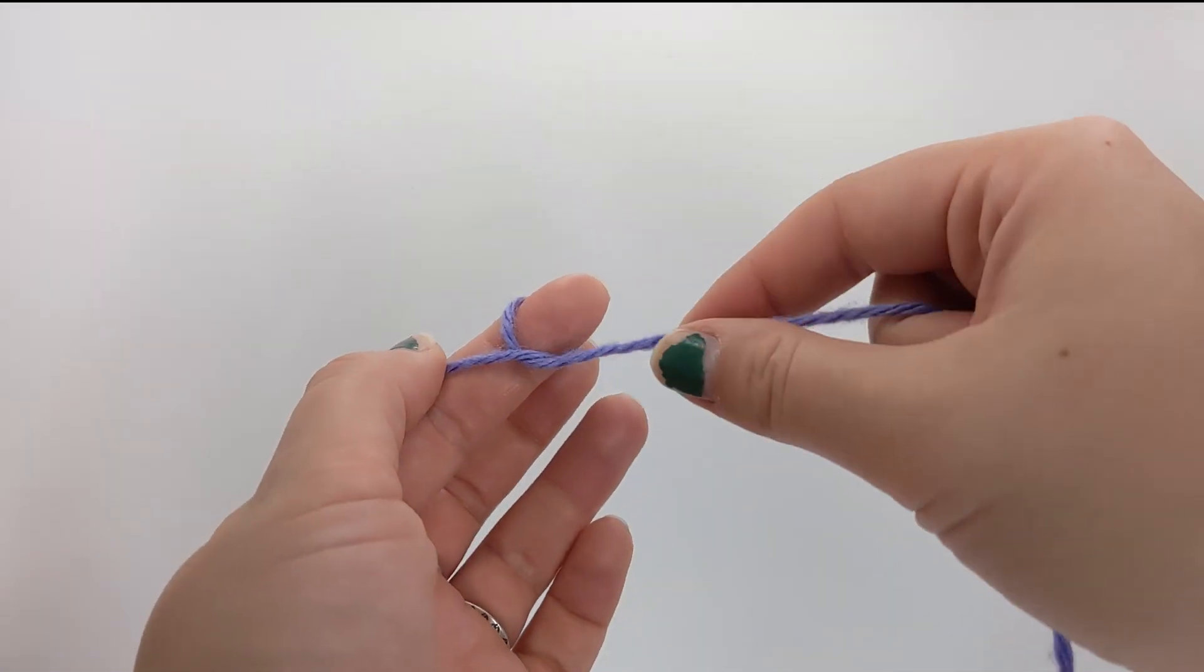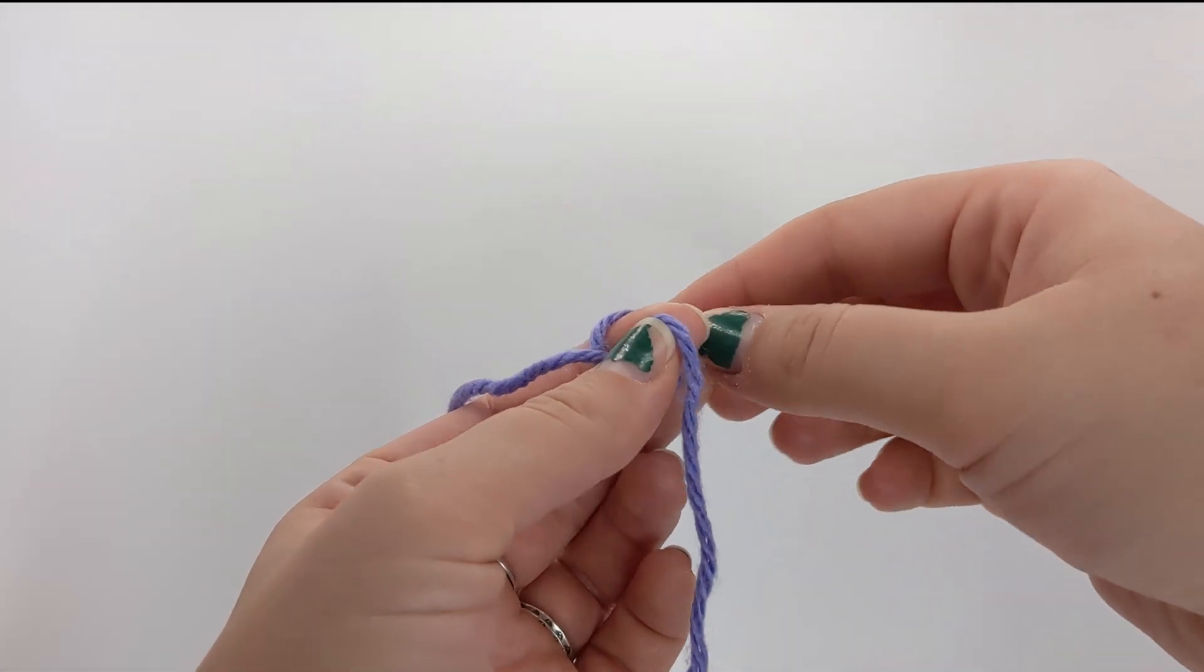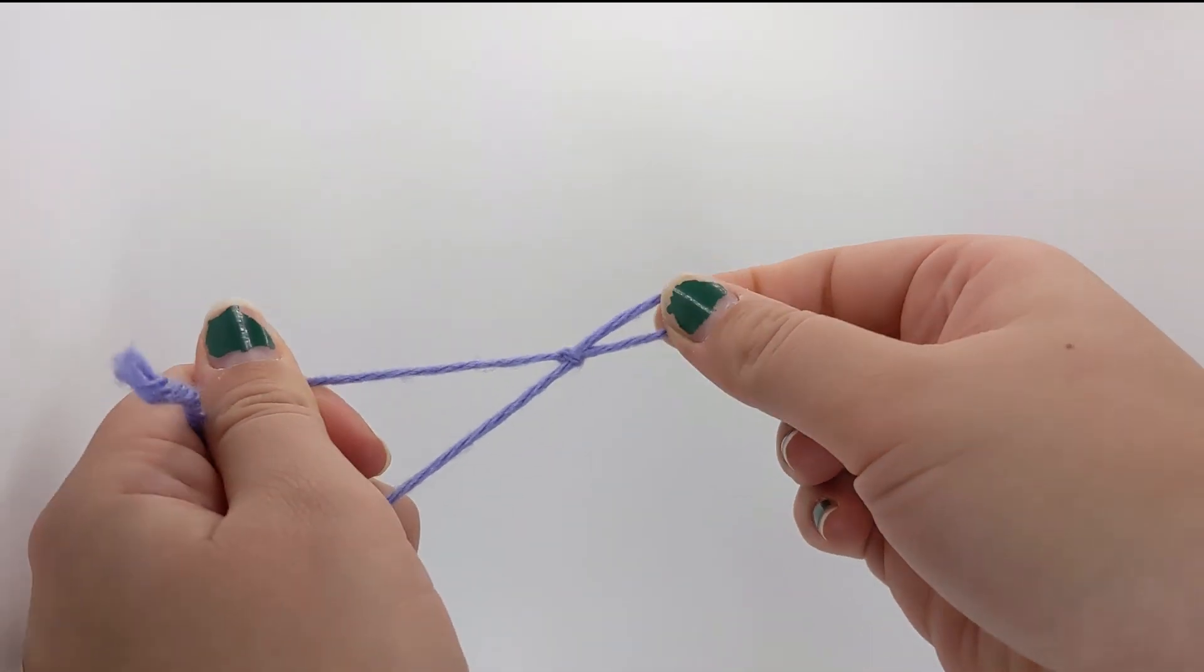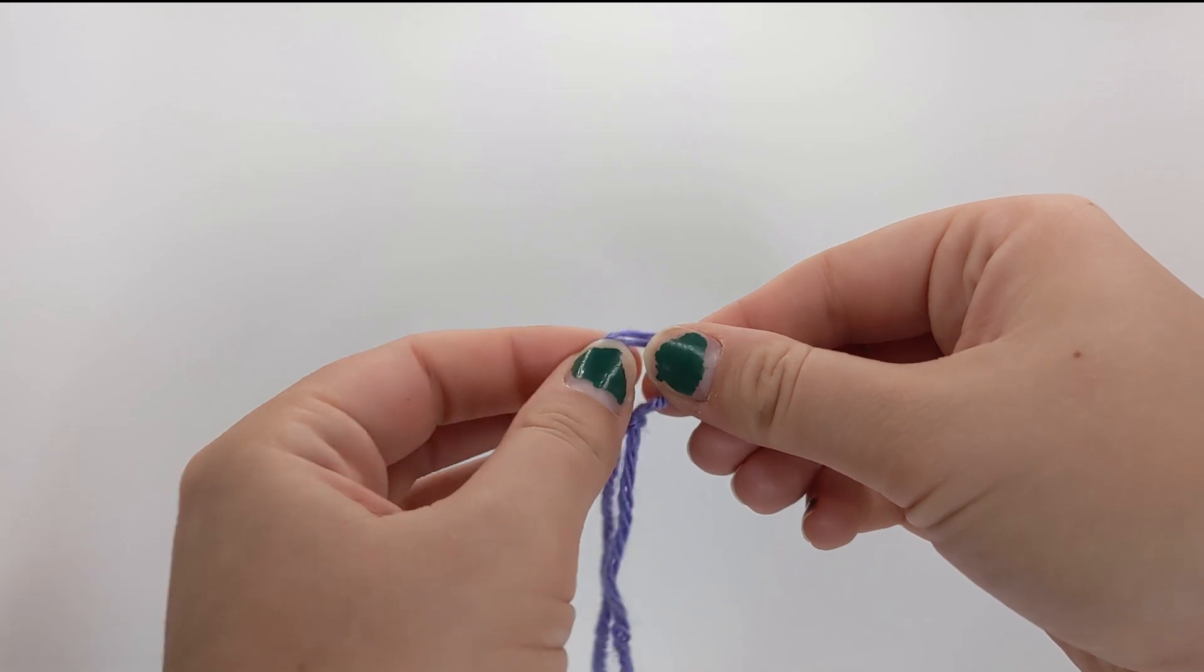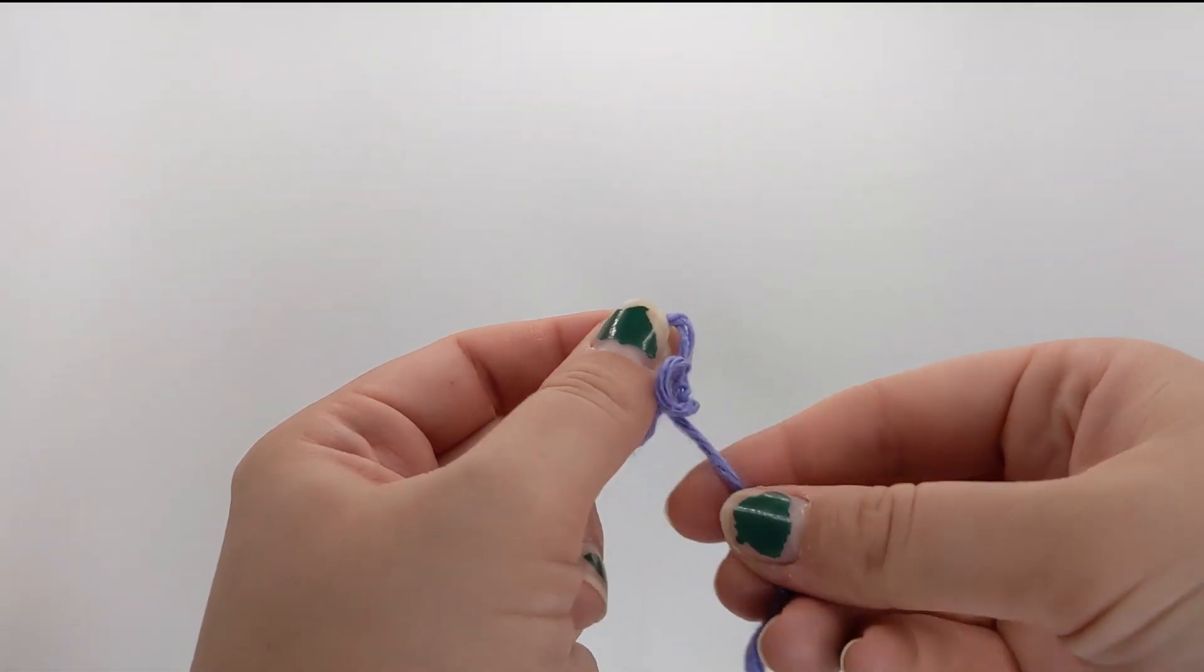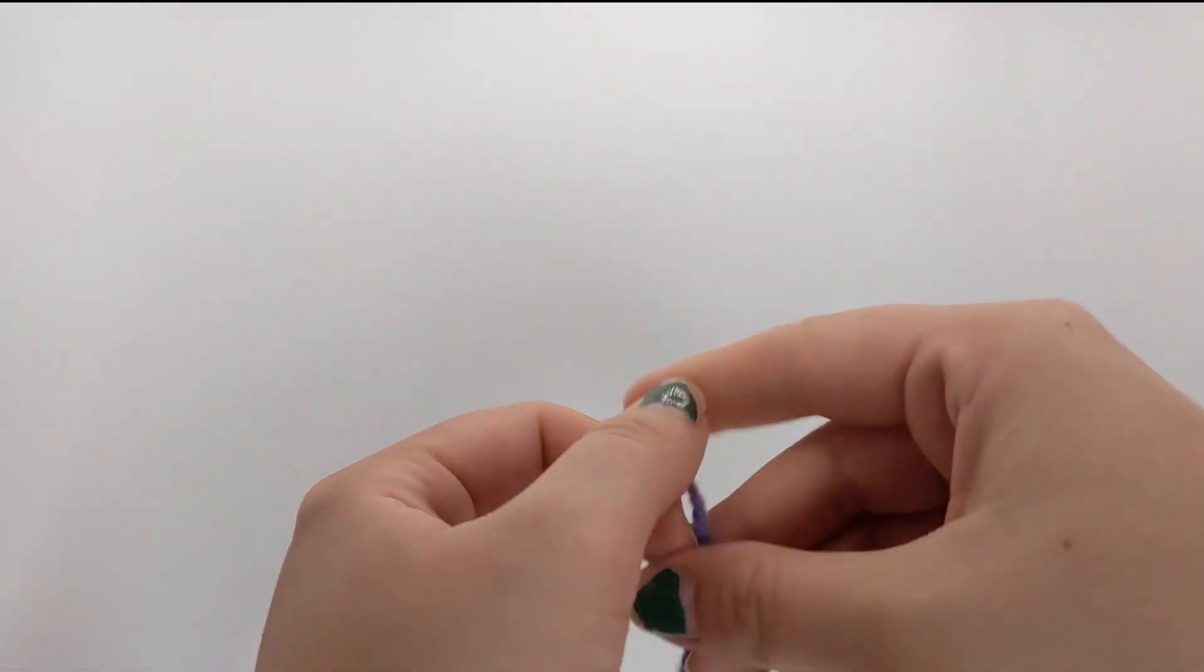This may be something that you have done before but basically you make that loop, you pull the loop through and nice and tight. This is the kind of loop that can just open up or pull closed tight. So again one more time.